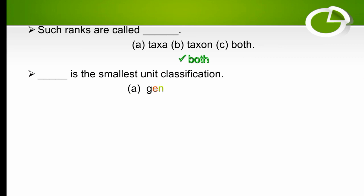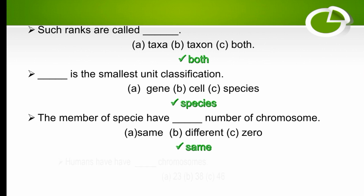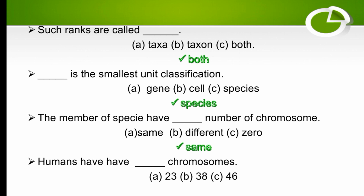Dash is the smallest unit of classification — gene, cell, or species? The right option is species. Species is the smallest unit of classification. Members of a species have the same number of chromosomes. Humans have 46 chromosomes — the right option is 46.